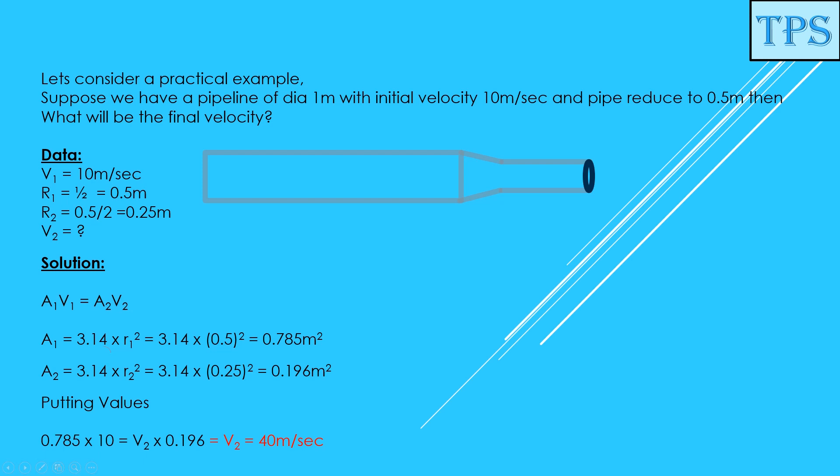Now you notice that in the smaller pipe, velocity is 40 meters per second, while in the larger pipe velocity was 10 meters per second. That means velocity has increased.